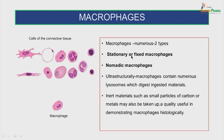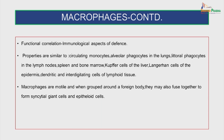The macrophages are basically of two types: the stationary or fixed macrophages and the nomadic macrophages. Ultrastructurally, the macrophages contain numerous lysosomes which digest ingested materials. Inert materials such as small particles of carbon or metals may also be taken up, a quality useful in demonstrating macrophages histologically. They play immunological aspects of defense. Their properties are similar to circulating monocytes, alveolar phagocytes in the lungs, littoral phagocytes in the lymph nodes, spleen and bone marrow, Kupffer cells of the liver, Langerhans cells of the epidermis, and dendritic and interdigitating cells of the lymphoid tissue. Macrophages are motile; when grouped around a foreign body they may fuse together to form syncytial giant cells and epithelioid cells.